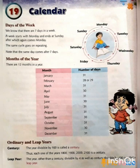What is a century? The year divisible by 100 is called a century. Thus, each one of the years like 1800, 1900, 2000, and 2100 is a century. What is a leap year? The year other than a century that is divisible by 4, as well as a century year divisible by 400, is called a leap year. When you have to calculate a leap year, we divide it by 4. If a year is divisible by 4, then it is a leap year; otherwise, not.